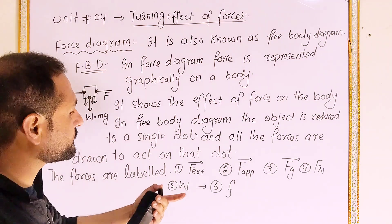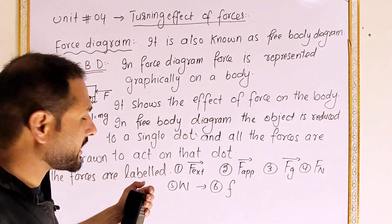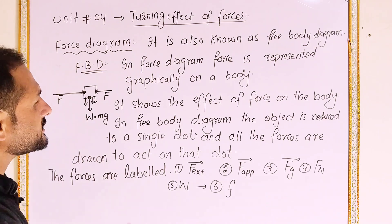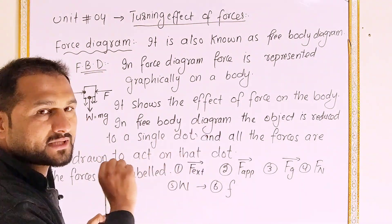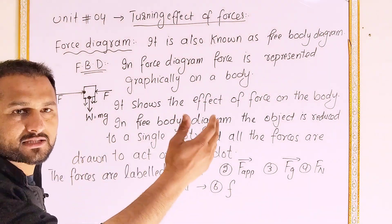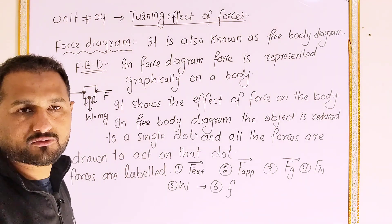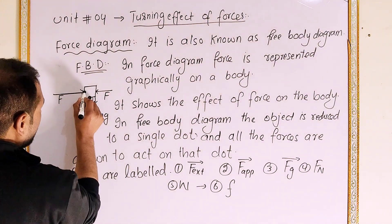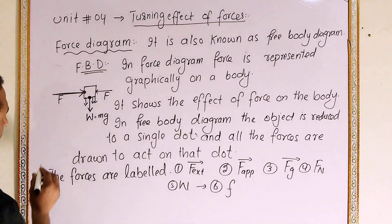Force is not a scalar quantity — it is a vector quantity. The vector is represented graphically. Each vector is represented by an arrow. The arrow length represents the force magnitude, and the arrowhead shows the force direction.